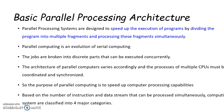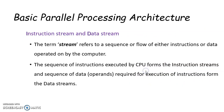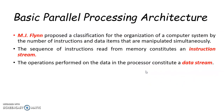Based on the number of instruction and data streams that can be processed simultaneously, computing systems are classified into four main categories. This is also known as Flynn's classification. In 1966, Michael Flynn proposed a classification for computer architectures based on the number of instruction streams and data streams present in a computer system.